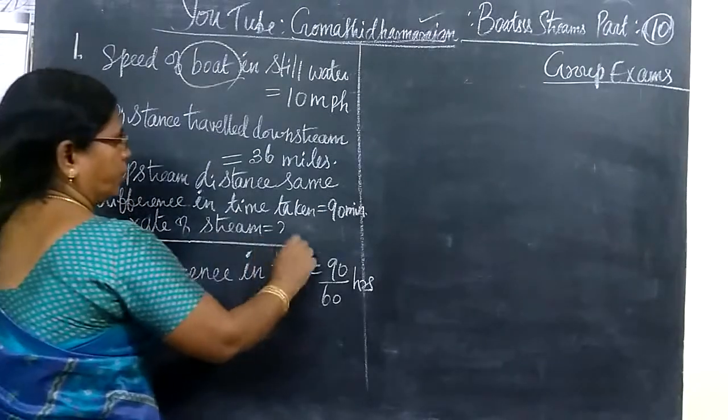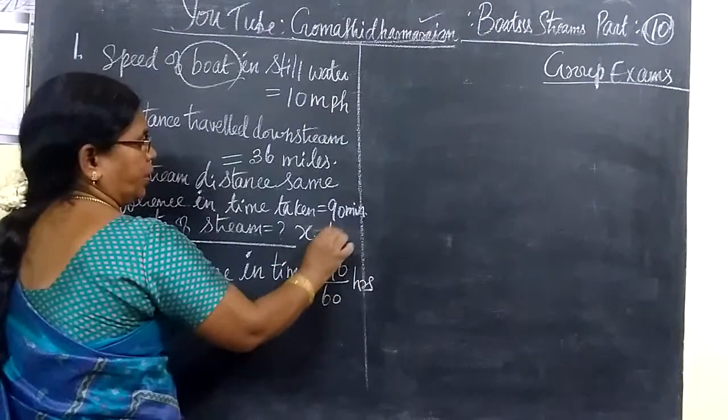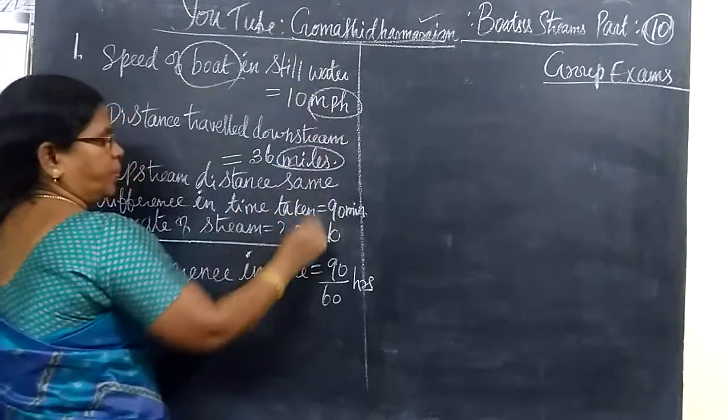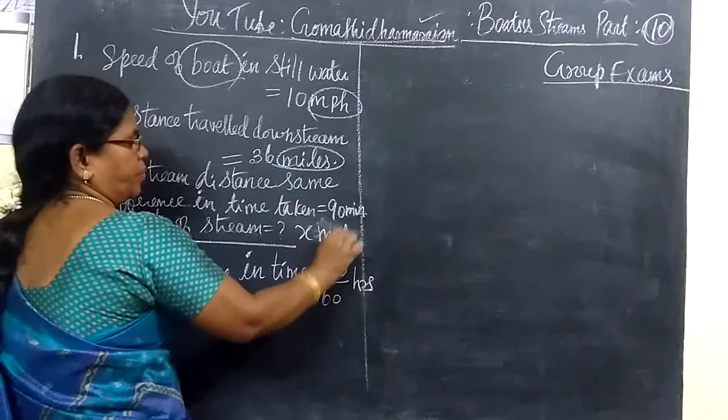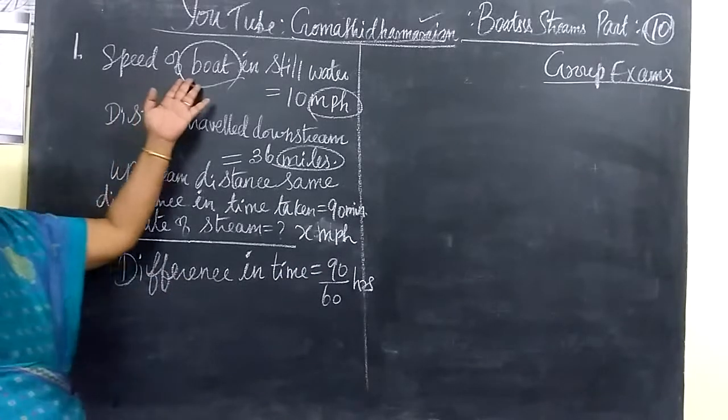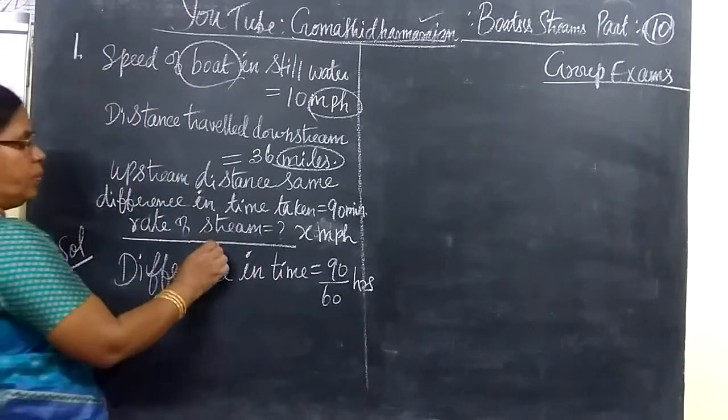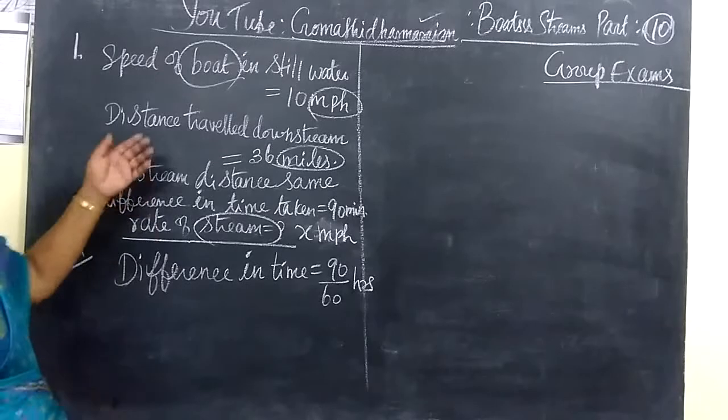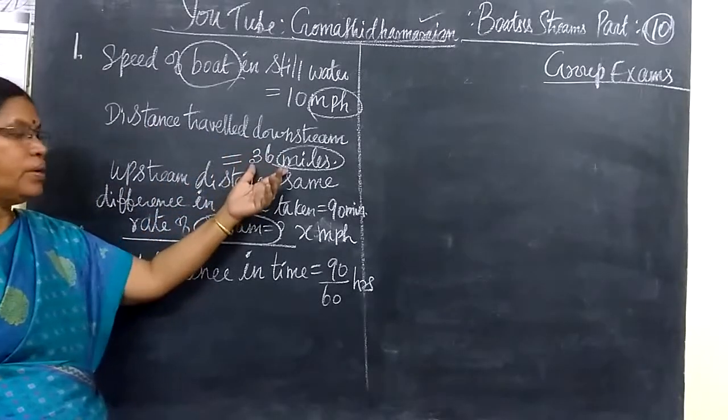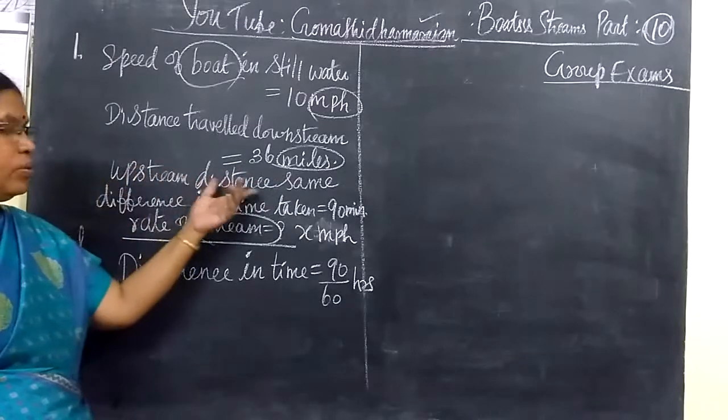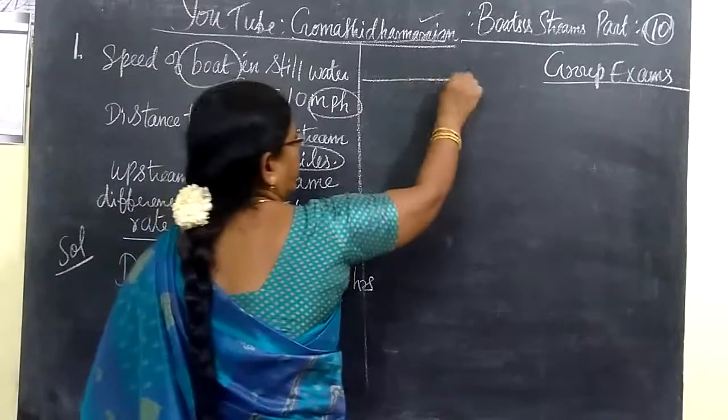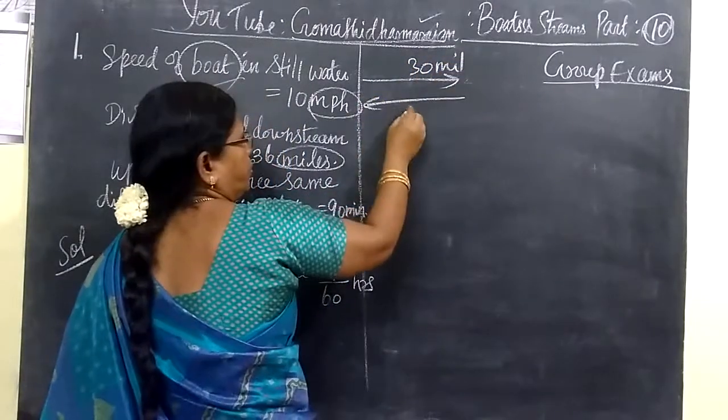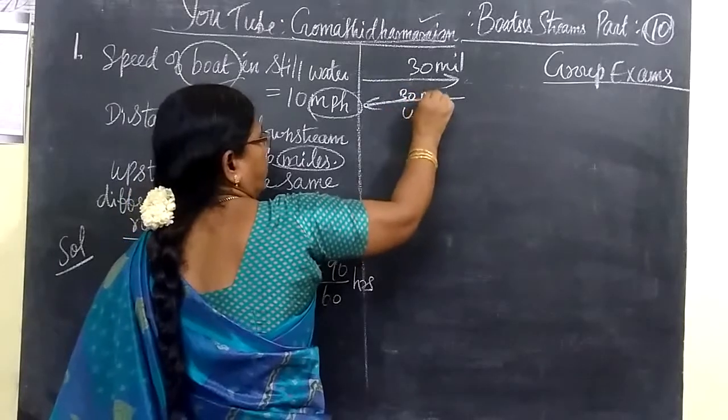Speed of the stream, that can be taken as V. You can write miles per hour. Distance traveled downstream is 36 miles. Upstream distance is the same. Distance traveled downstream, 36 miles. Then distance traveled upstream, that is also 36 miles.